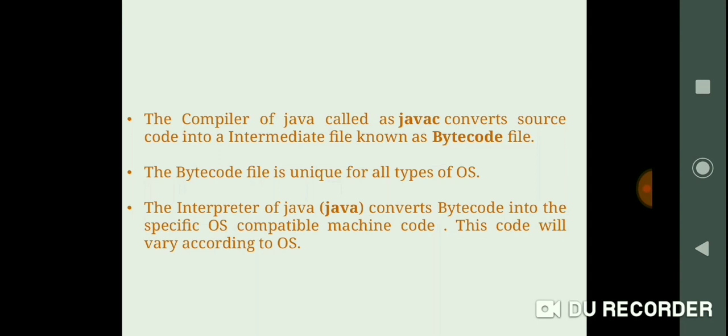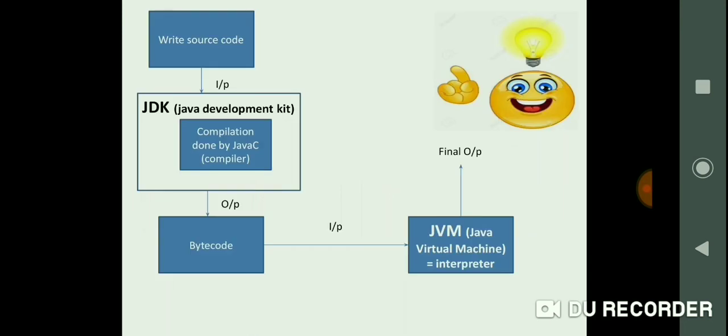This bytecode is unique for all types of operating systems. Then the interpreter of Java, that is Java, converts this bytecode into specific operating system-compatible machine code. This code will vary according to operating system. We will discuss this further.